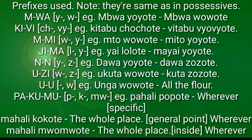The prefixes used with Oote are the same as those used in possessives. If you haven't checked possessives, go watch that video in this channel. The M-wa class uses 'yi' and 'wa': mbua yoyote, mbua wawote.